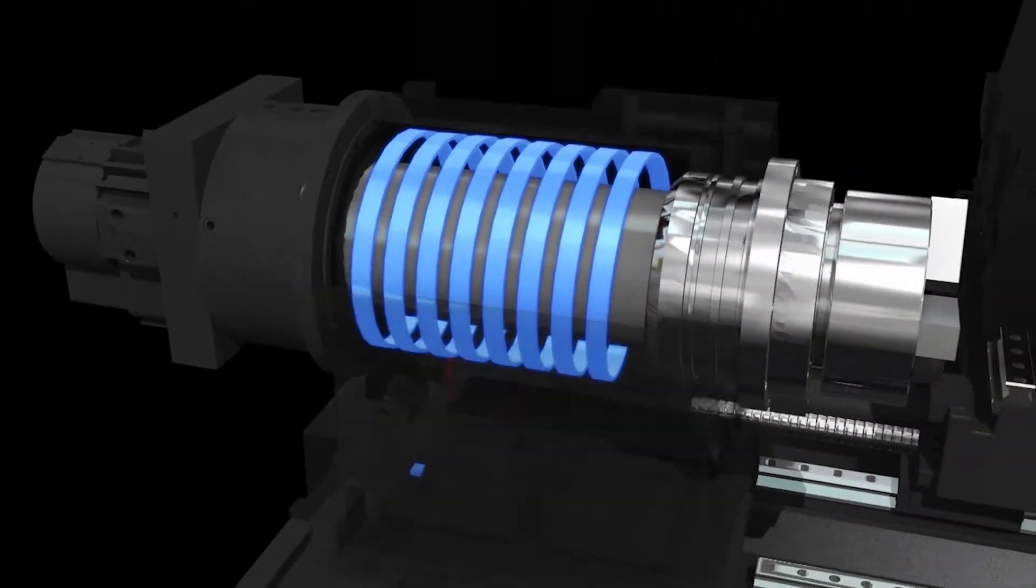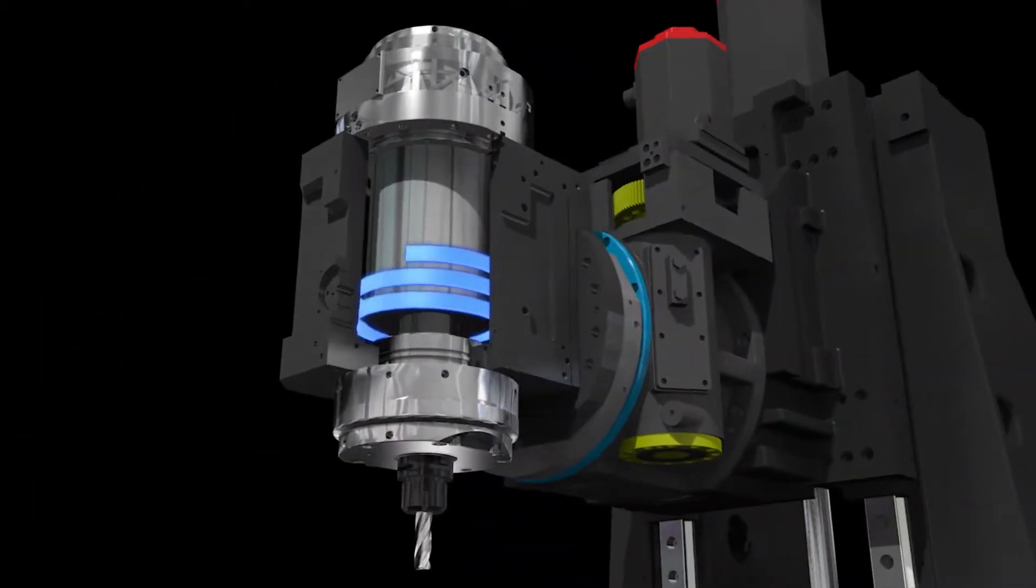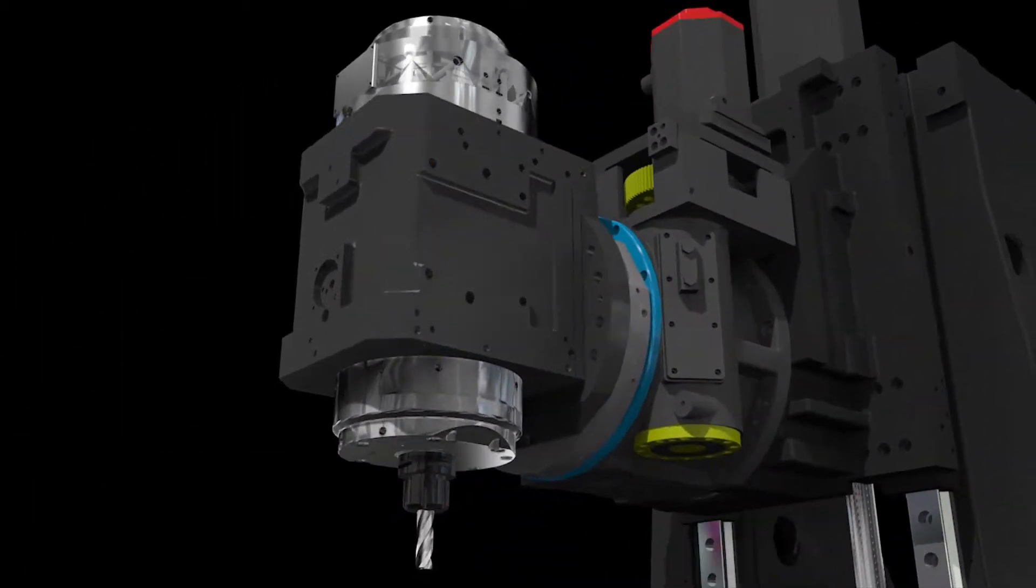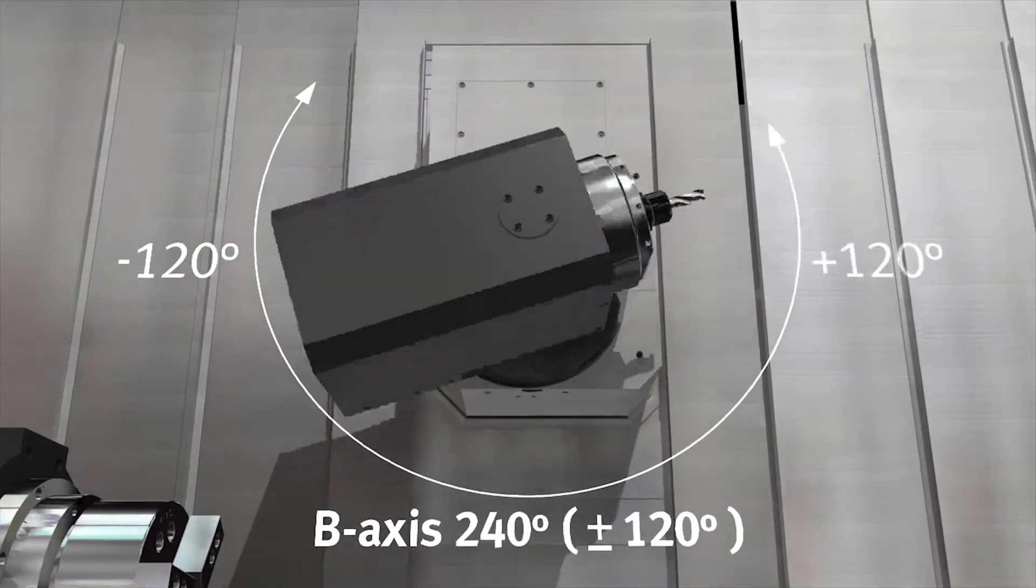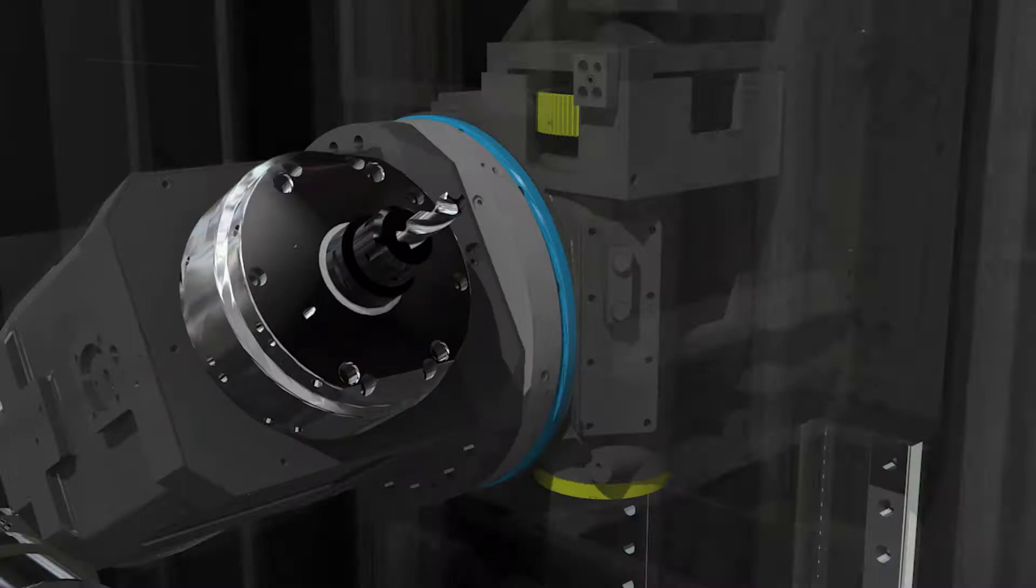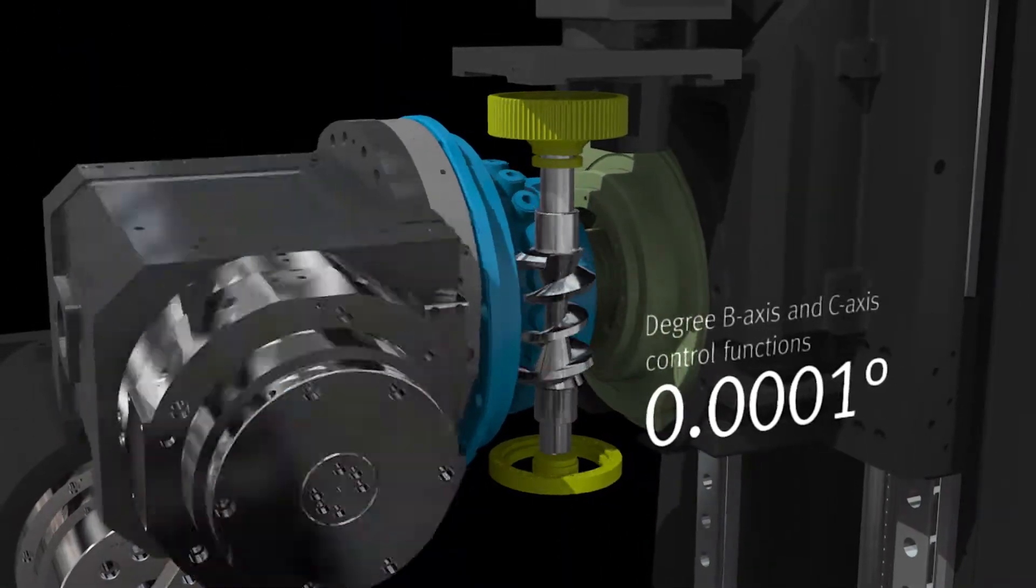A cooling device to prevent deformation minimizes the heat deformation of the workpiece. Also, the precision control feature powered by a 0.0001 program degree of B and C axes guarantees the best high precision work performance.